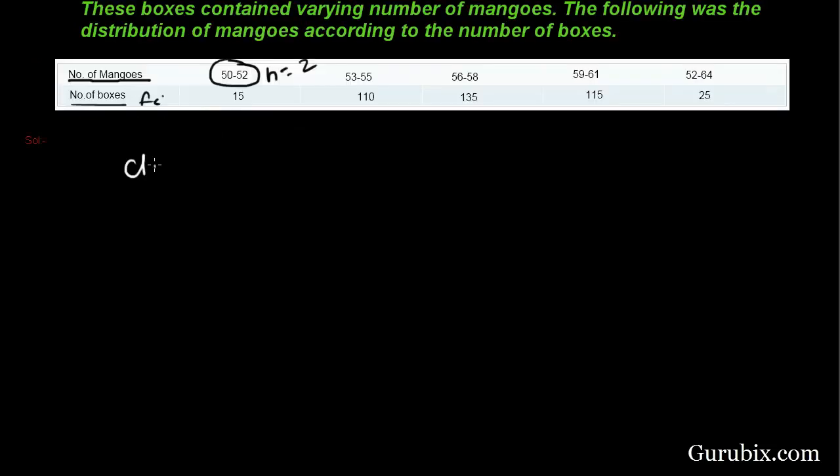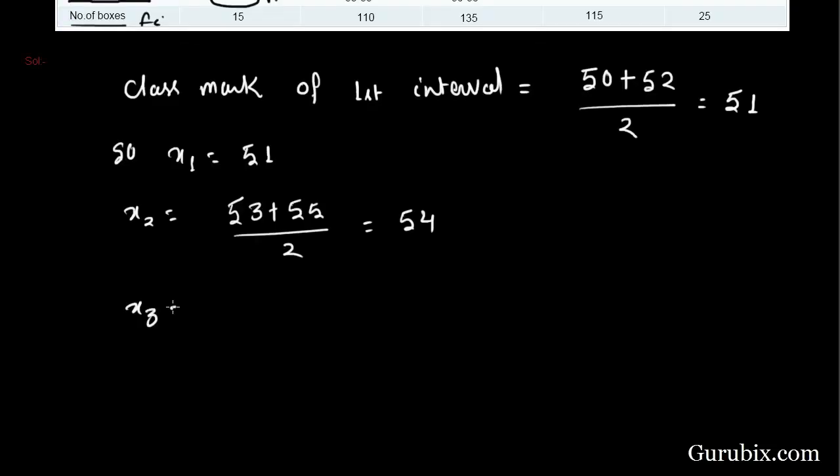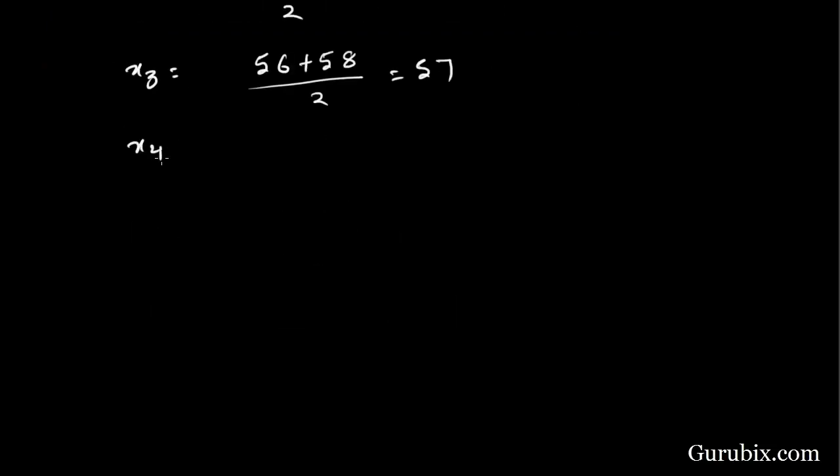Class mark of first interval equal to 50 plus 52 upon 2 is equal to 51. So x1 is 51. x2 is 53 plus 55 upon 2 is equal to 54. x3 is 56 plus 58 upon 2 is equal to 57. Similarly, x4 is 60, x5 is 63.